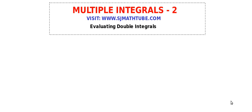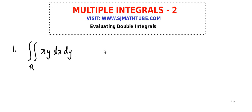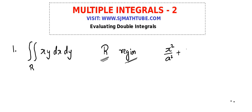For those students who are following from multiple integrals 1, here is the first question. Question number 1: evaluate the double integral over r of x·y dx dy, where r is the region in the first quadrant of the ellipse x²/a² + y²/b² = 1.